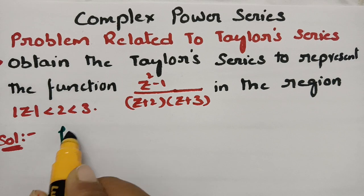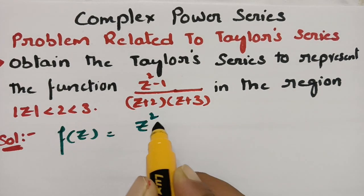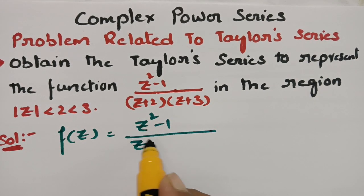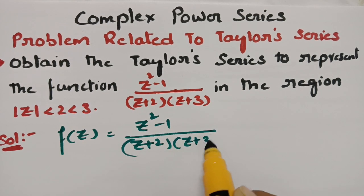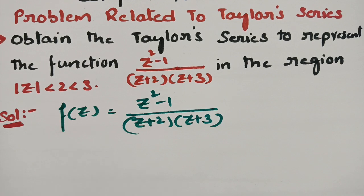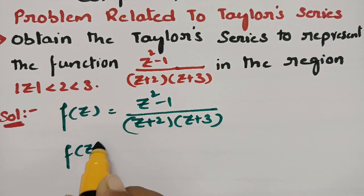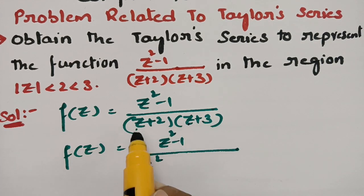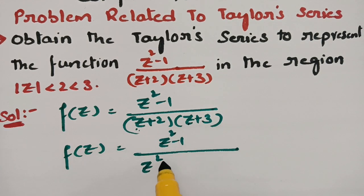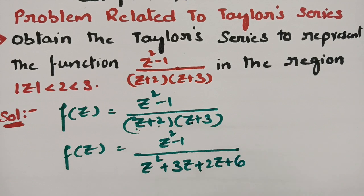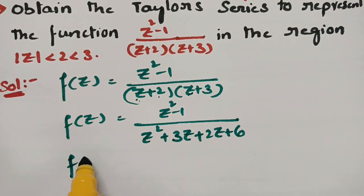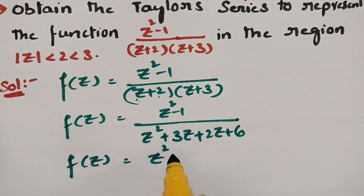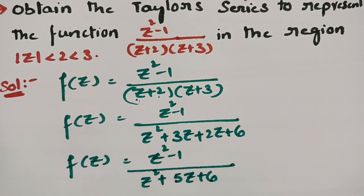Our function f(z) is given as (z²-1)/((z+2)(z+3)). If I multiply the denominator, this will be z² + 3z + 2z + 6, so f(z) equals z²-1 divided by z² + 5z + 6.